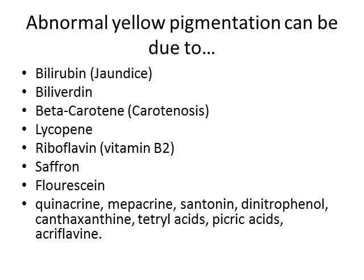Riboflavin, vitamin B2 — this is called riboflavinemia — can also cause abnormal yellow pigmentation. Saffron is a type of spice; if you eat enough of it you're going to go yellow. Fluorescine is a medication we use — we usually drop it on the eye — that makes the eye yellow. When you shine a blue light, if there's any ulcer or injury on the eye, it's going to shine bright blue in a dark room, so you will use that quite a lot if you're examining eyes. The patient's eye will remain stained yellow for about a day after fluorescine staining. Various medications and chemicals can also cause abnormal yellow pigmentation.